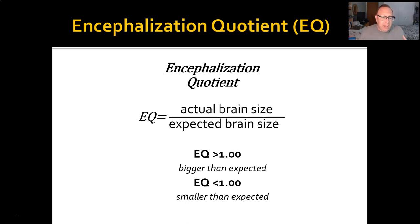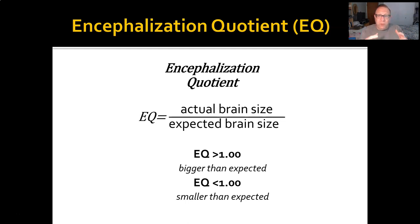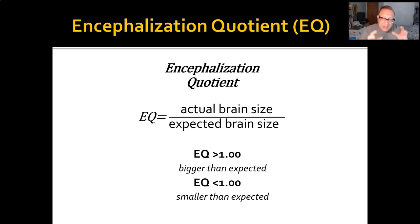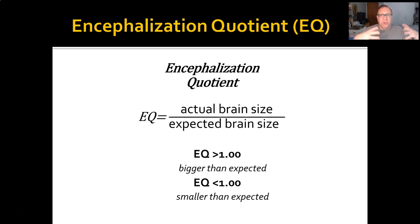The degree to which a brain is either larger or smaller than expected can tell you something about how much emphasis evolution has put on evolving that brain structure. When evolution selects for larger body sizes, brains usually scale up as well. So during natural selection, what we want to ask isn't just are brains getting bigger, but is evolution selecting for larger brains faster than it's selecting for larger bodies? That tells us there's something about the brain that's being selected for, rather than just being a side effect of overall body size increase.